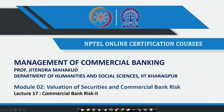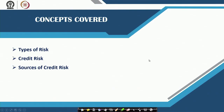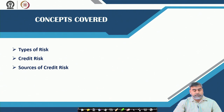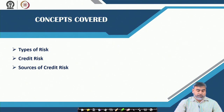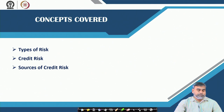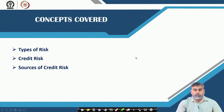In today's session we will be discussing the different typical types of risk that commercial banks face. Out of the different types of risk, the major type is credit risk. Today's discussion will mostly focus on credit risk, its sources, where it comes from, and how to define it from the banking perspective.